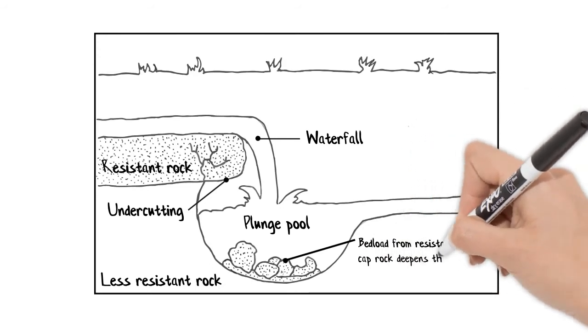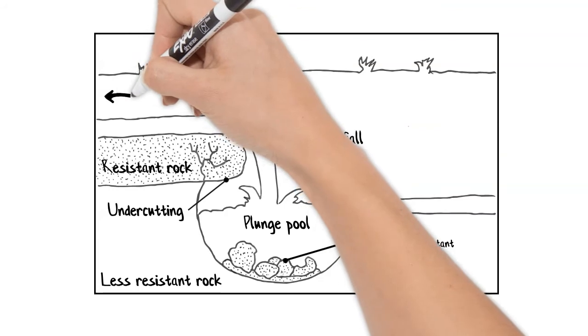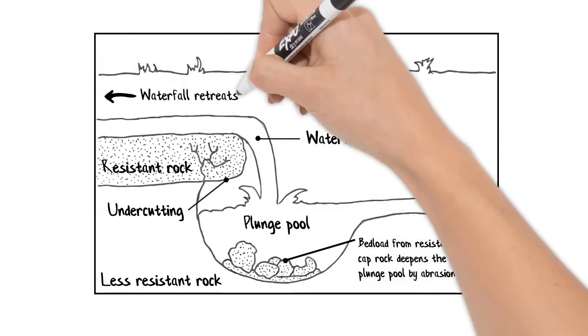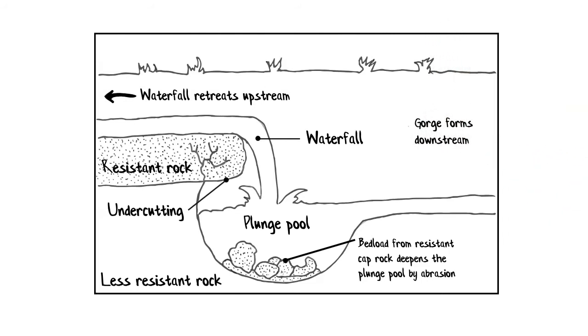And on top of that, I'm going to put a little arrow showing the direction of the waterfall retreating upstream. And finally, a label showing the gorge that's forming downstream.